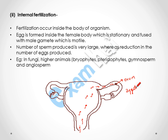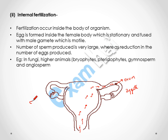The development of the zygote takes place inside the body of the female organism. Internal fertilization is seen in fungi, bryophytes, pteridophytes, gymnosperms, and angiosperms. In flowering plants also — we will now see the example of a flowering plant.